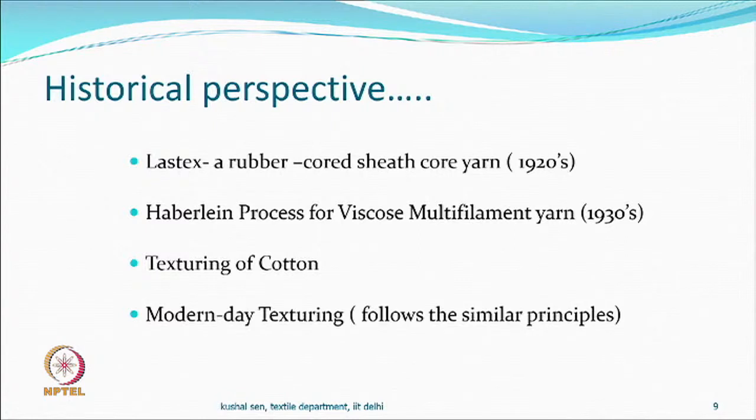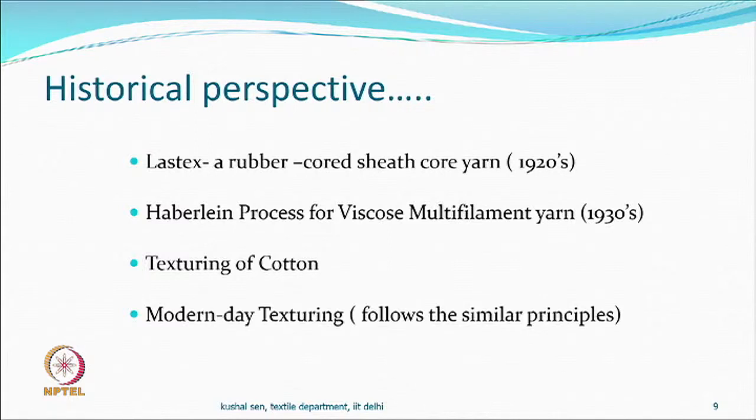The next one is the Heberlin process, from the 1930s. Even in 1930 the viscose multifilament and viscose processes were developed — they were calling them artificial silk in the beginning. The Heberlin process was designed to give stretch in a viscose multifilament yarn. The process was simple: they would twist the yarn, take it to an autoclave for steaming, come back, untwist it, and found that some bulk and stretch gets developed. Obviously there were problems — when wetted, some things were lost because there was no permanency in the structure, but the principle was there.